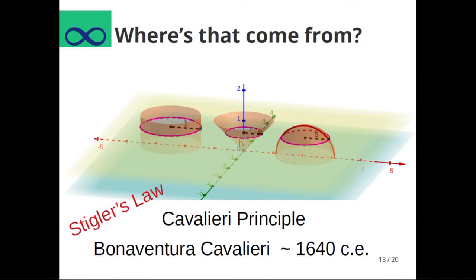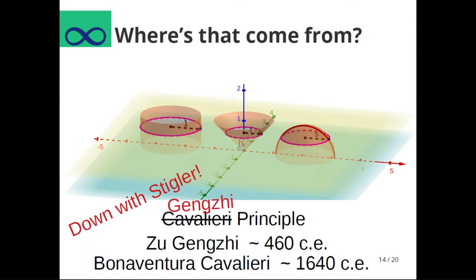And so we use a principle that was first written about by Zhu Gengzi in about 460 of the Common Era. And so, of course, because he came up with it by Stigler's law, we call it the Cavalieri principle after Bonaventura Cavalieri, who also happened to write about it over a thousand years later. But I figure since it was a thousand years later, we should be down with Stigler, and we should call it the Gengzi principle.